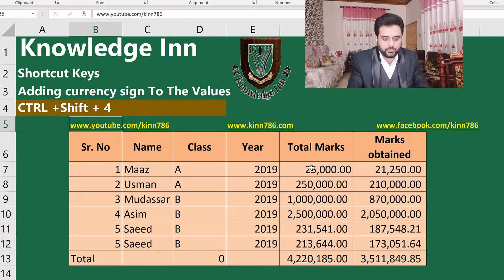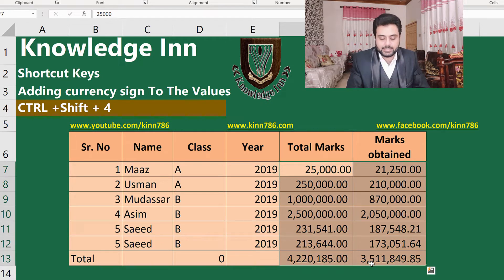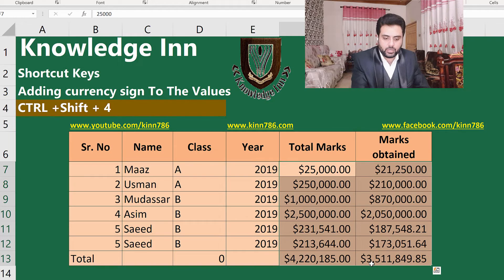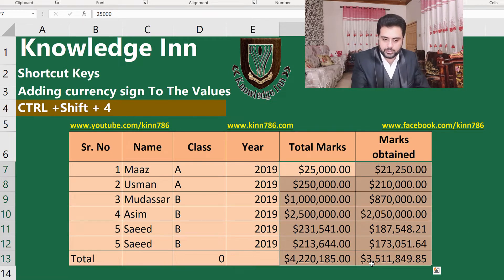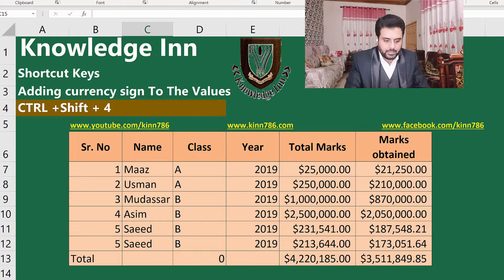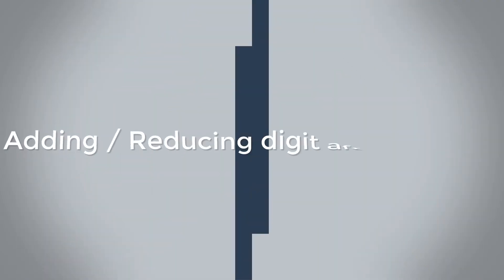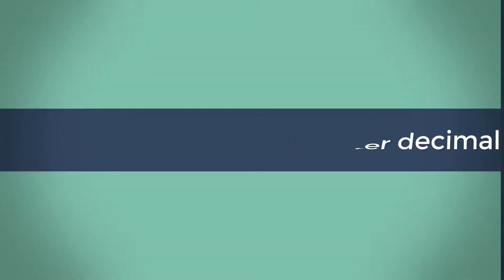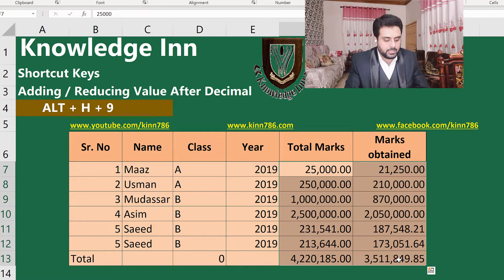Let's jump to currency. If we want to add currency to our selected cells, we simply have to press Ctrl+Shift+4. It will add the currency sign, which is by default the dollar sign, and this will be applied to all the cells that have been selected.